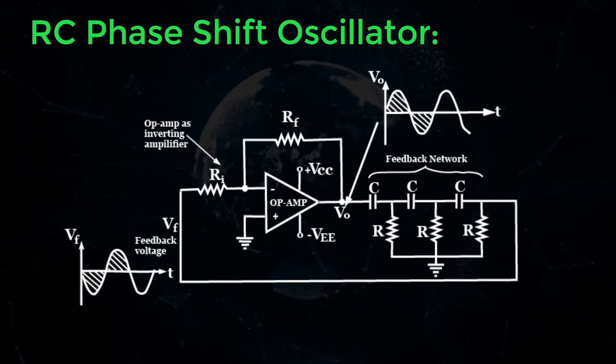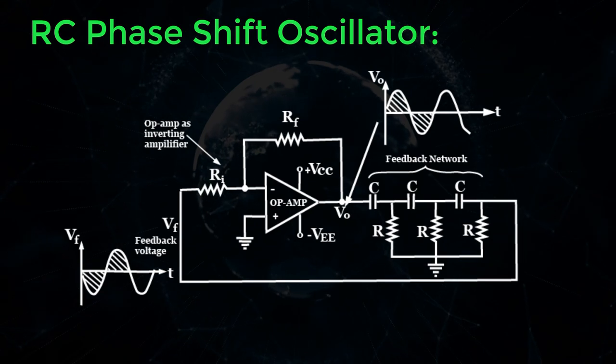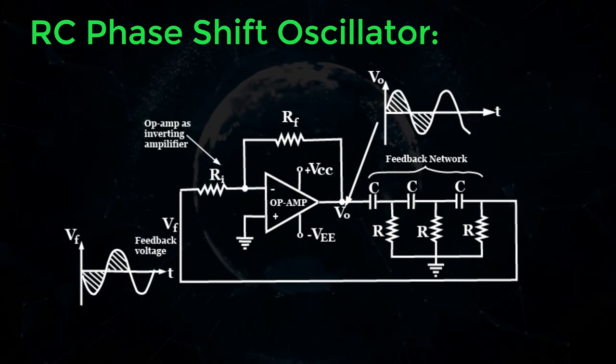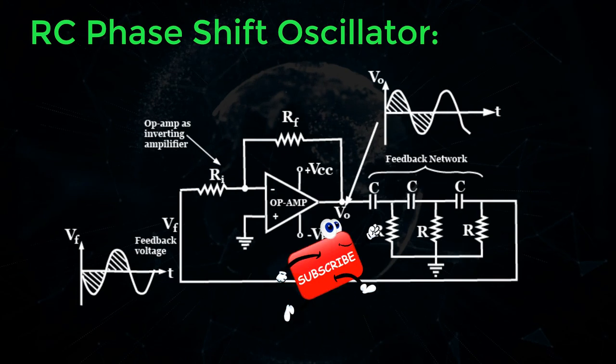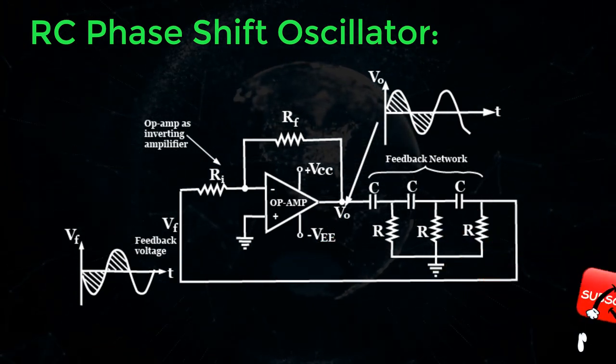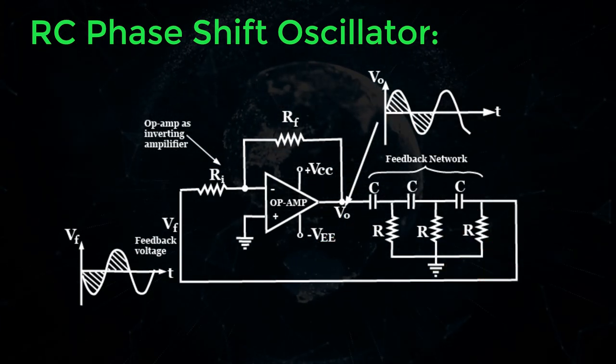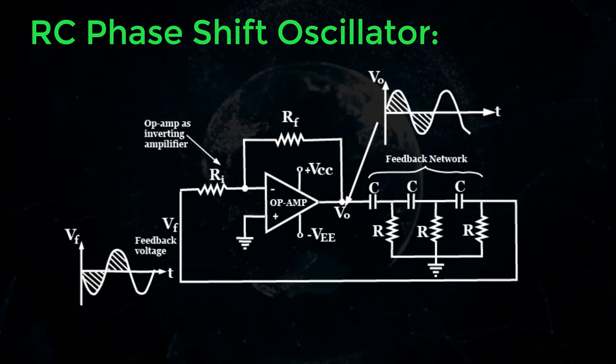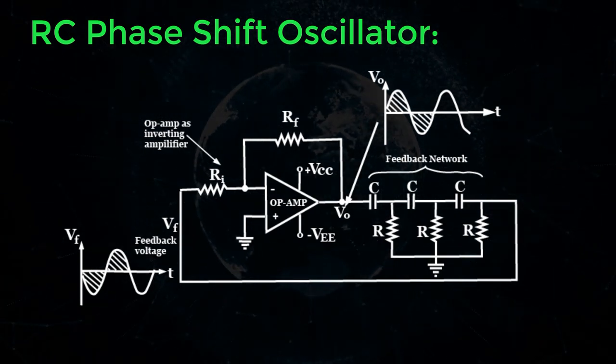It consists of an inverting amplifier element such as op-amp, that is operational amplifier, or transistor with its output fed back into its input through a phase shift network consisting of capacitors and resistors in a ladder network.